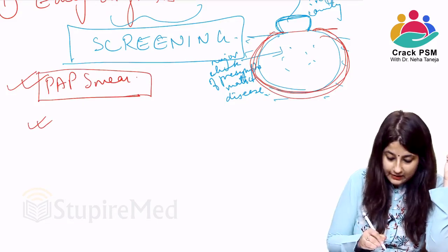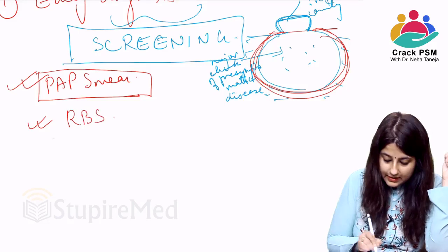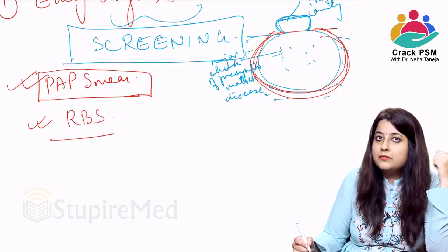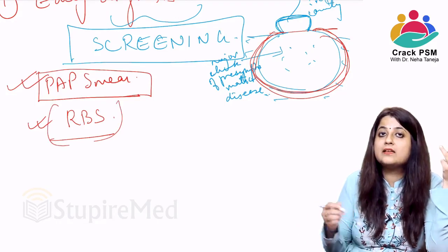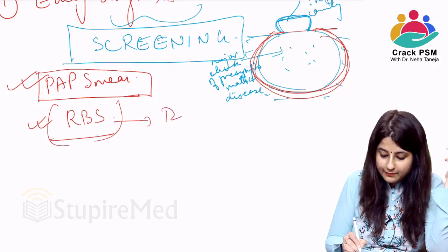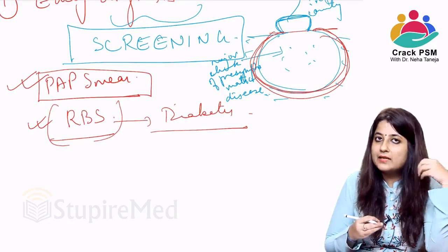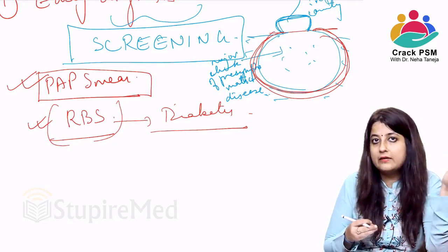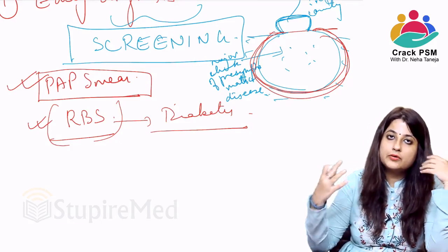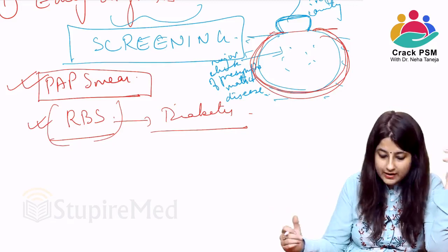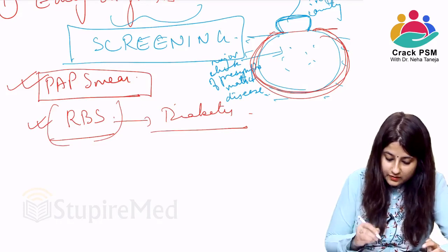Another example of screening for early diagnosis: performing a random blood sugar (RBS) test on a group of elderly people to make an early diagnosis of diabetes — so that if diabetes has started occurring, we can arrest it at its very early stage, preventing progression to diabetic retinopathy or diabetic ulcers.